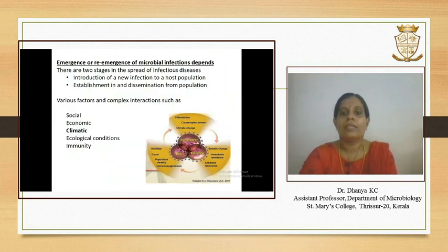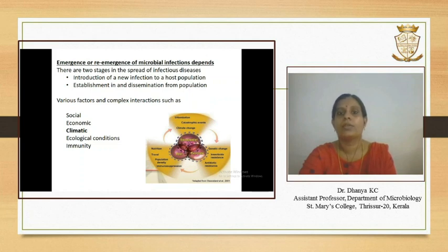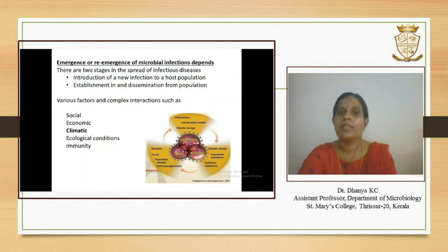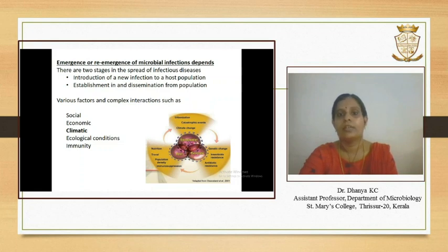What are the factors which influence the emergence or re-emergence of microbial infections? There are two distinct stages in the spread of infectious diseases. The first step is the introduction of a new infection to a host population. It is estimated that there are approximately 1,400 pathogens capable of infecting humans, but only 500 are capable of human-to-human transmission, and fewer than 150 have the potential to cause an infectious disease. Ecological changes or human interventions provide opportunities for these pathogens to emerge and gain access to human populations.